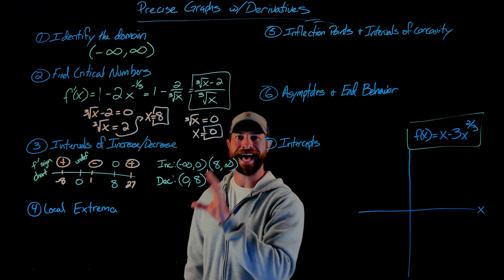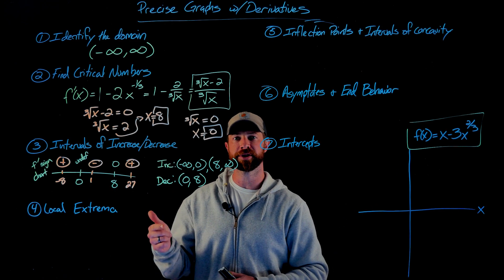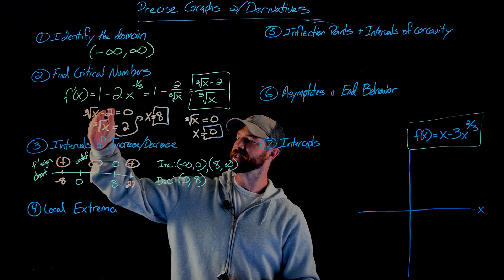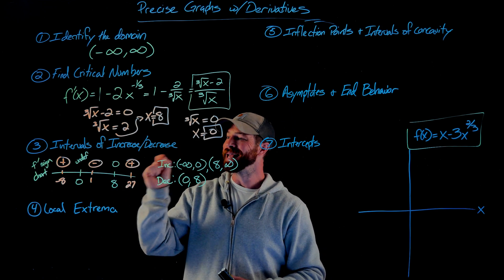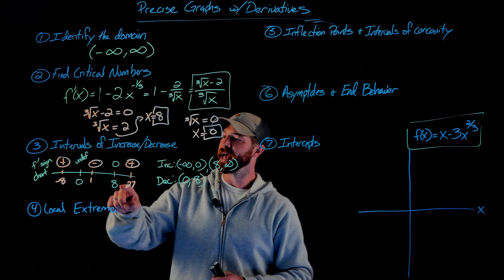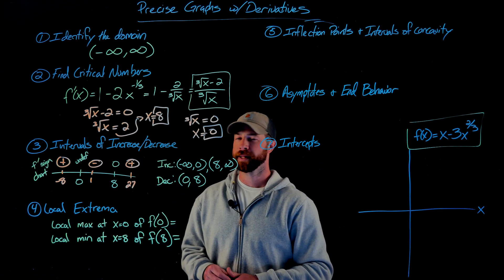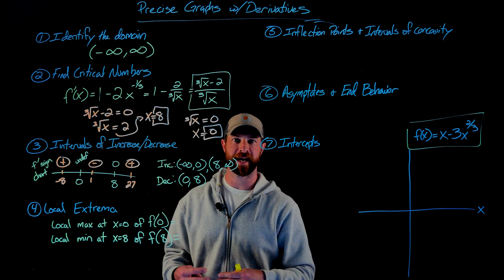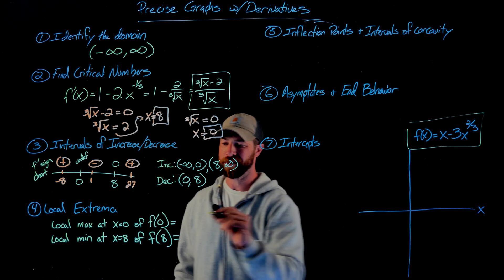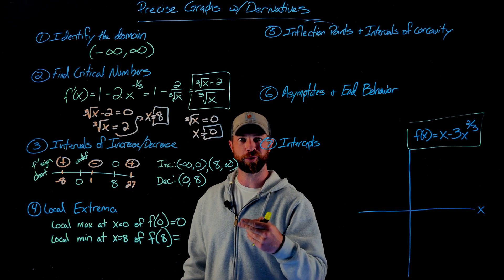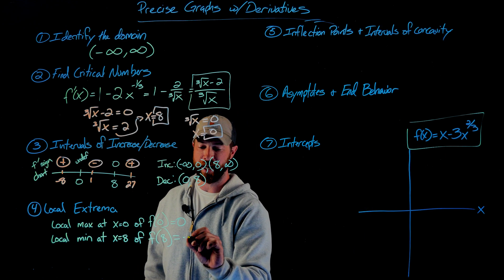Using the sign chart, I can identify local mins and maxes. At x = 0, the sign changes from positive to negative, so even though the derivative is undefined there, since zero is in the domain, it must be a local maximum. At x = 8, the function is decreasing before and increasing after, so this is a local minimum. Plugging zero into f(x) gives 0 minus 0, so the local max value is 0. Plugging eight in gives a local minimum value of negative four.